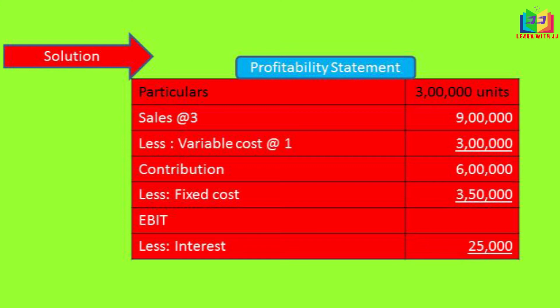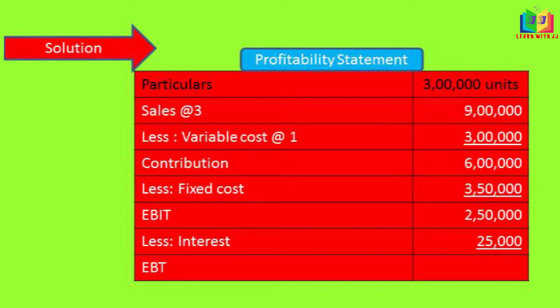Sales minus variable cost gives us the contribution: 9 lakh minus 3 lakh equals 6 lakh. Next, we subtract the fixed cost from contribution and we get 2 lakh 50,000 as EBIT. Then interest is subtracted from EBIT and we get 2 lakh 25,000 as EBT.